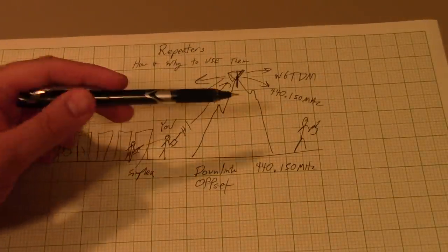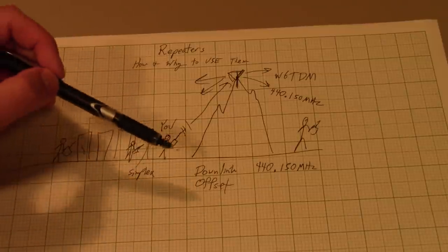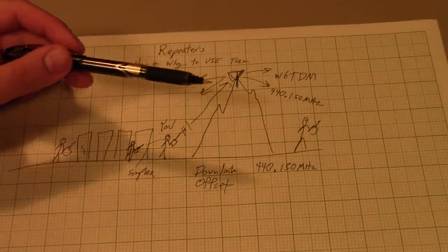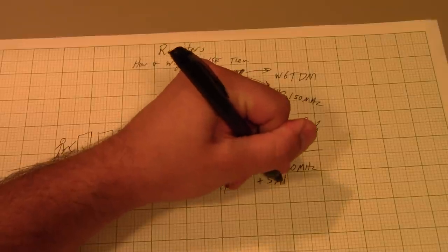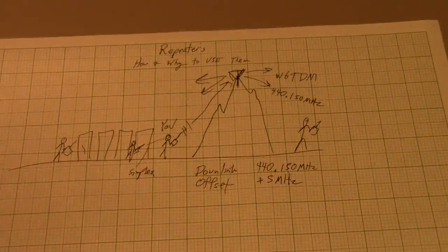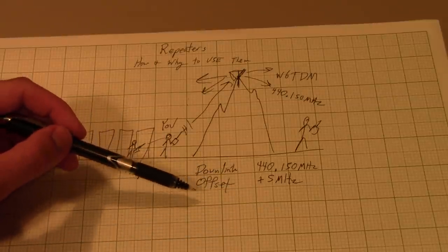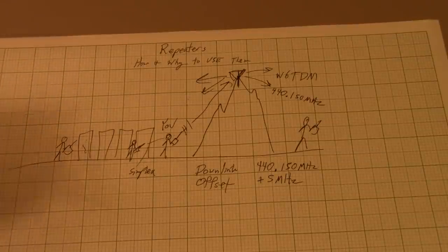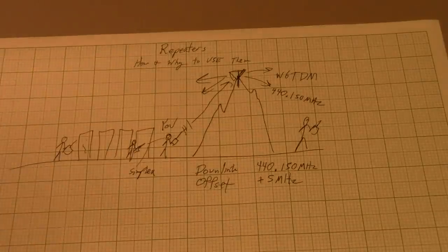But that's not enough, because if you want to actually talk into the repeater and have everyone else hear you, you need to know what its uplink frequency, or the one it's listening on, is. What I would instead tell you is that the offset is plus 5 MHz. This is because when you enter it in your radio, the radios actually expect to get the downlink frequency and the offset. So if I were to tell you that the uplink frequency is 445.150 MHz, that would really just kind of be inconvenient for you, because you would have to back calculate the math.